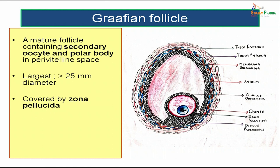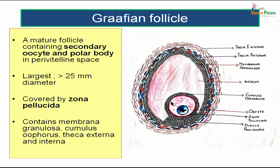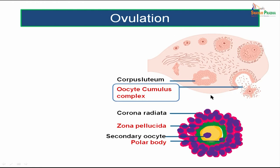The Graafian follicle is the mature follicle containing a secondary oocyte and one polar body in the perivitelline space. The secondary oocyte forms after the first meiotic division, which is completed just before ovulation. The oogenesis is arrested in the prophase of the first meiotic division at birth. The Graafian follicle has a diameter of roughly 20 to 25 millimeters or more, and the secondary oocyte is still covered by zona pellucida.